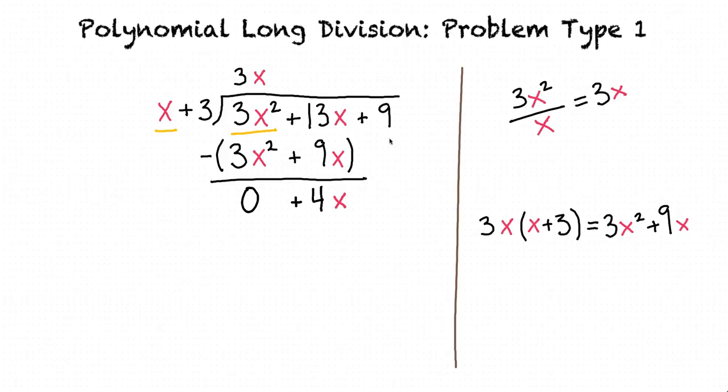And nothing is subtracted from 9, so that just stays the same. We have +9 here. So at this step, our result is 4x + 9.